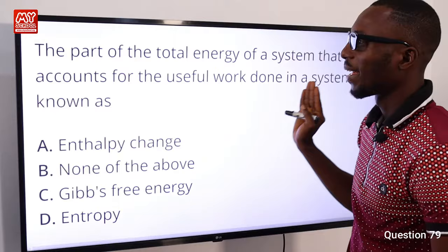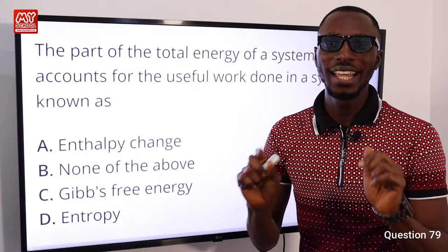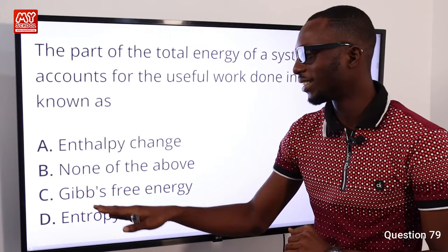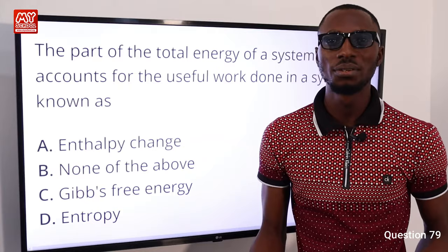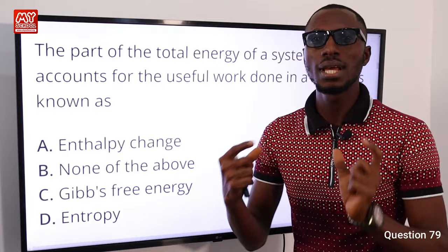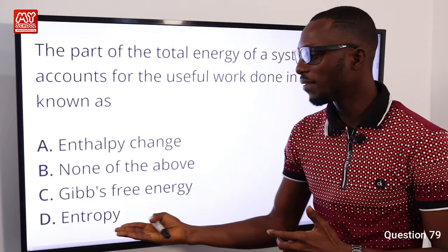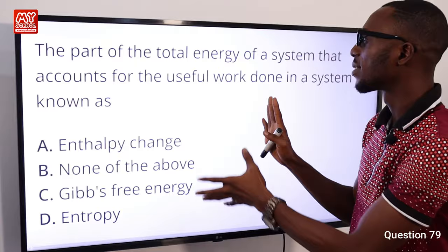Question 79: The part of the total energy of a system that accounts for the useful work done is known as what? Enthalpy change talks about heat content comparing system and surroundings. Gibbs free energy tells us about the spontaneity and the total useful work done in a system — influenced by both enthalpy change (ΔH) and entropy (ΔS). Option C — Gibbs free energy — is correct.